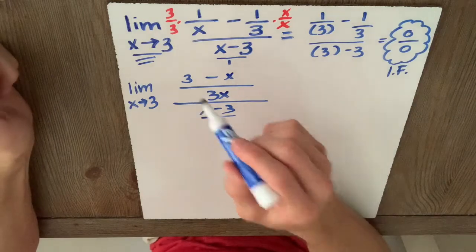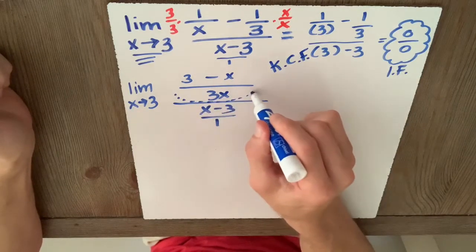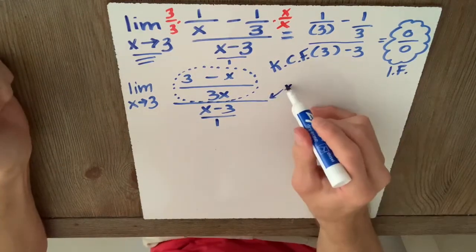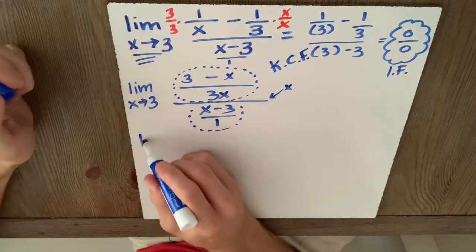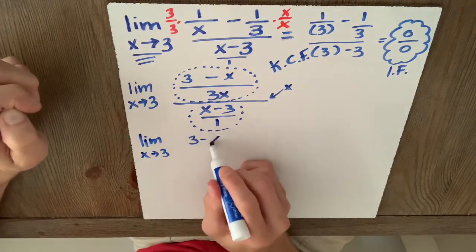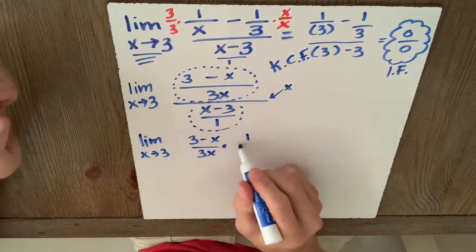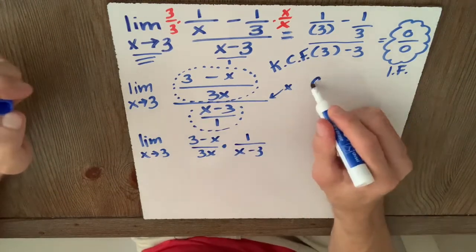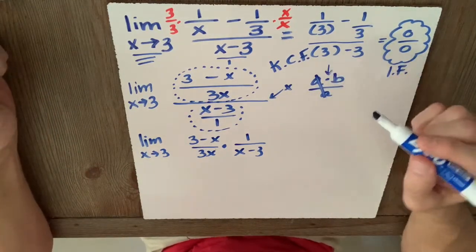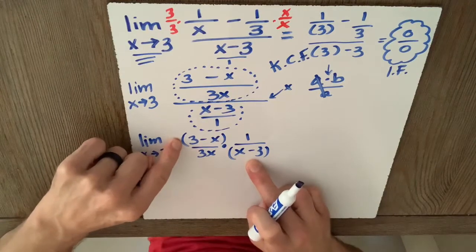Now what I'm going to do is I'm going to do a keep, change, flip. I'm going to keep this fraction. I'm going to change division to multiplication and then I'm going to flip this fraction. So this is going to be the limit as x approaches 3 of keep 3 minus x over 3x. Change division to multiplication. And then I'm going to flip this 1 over x minus 3. Now remember, a times b over a, that allows us to cancel as long as we have multiplication there. So we're very happy with this multiplication.